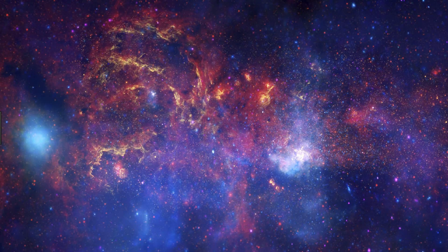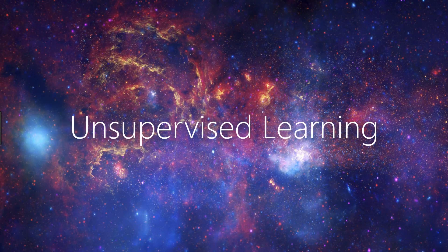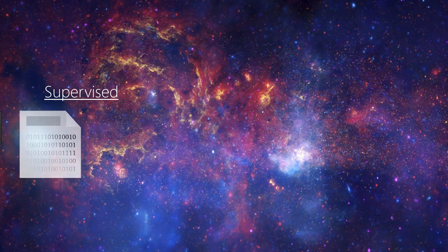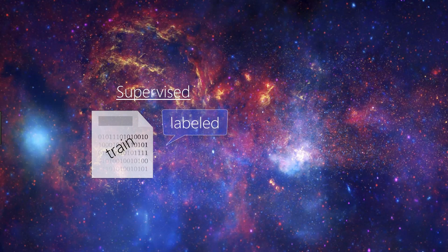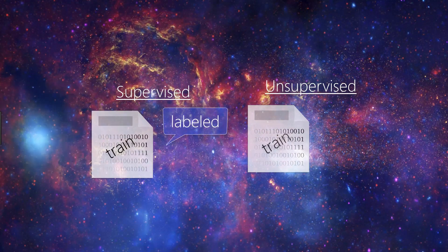In this video, we'll be discussing the concept of unsupervised learning. In our previous video on supervised learning, we talked about how supervised learning occurs when data in our training set is labeled. In contrast to supervised learning, unsupervised learning occurs when the data in our training set is not labeled. Each piece of data passed to our model during training is solely an unlabeled input object or sample.